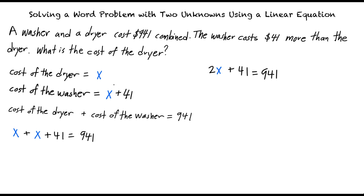We want to isolate the unknown variable x. Subtracting 41 from both sides of the equation and dividing both sides of the equation by 2, we will find that x is equal to $450. So the cost of the dryer is $450. Would you like to try the next problem?